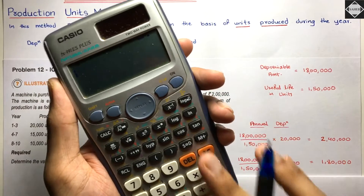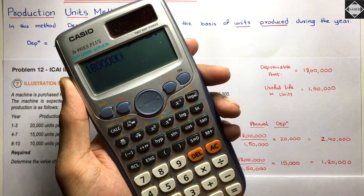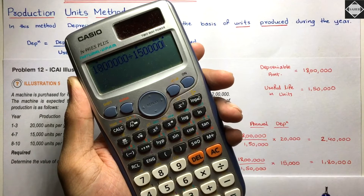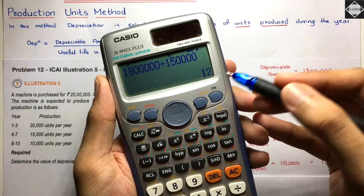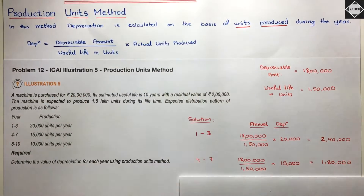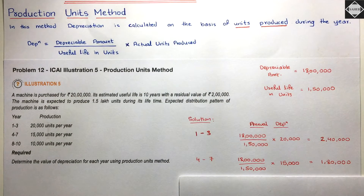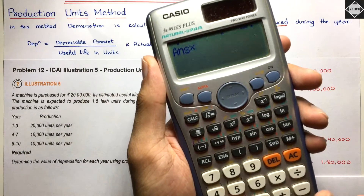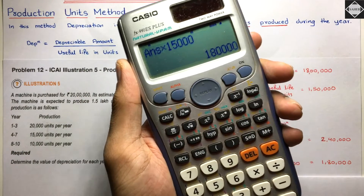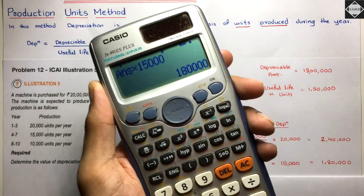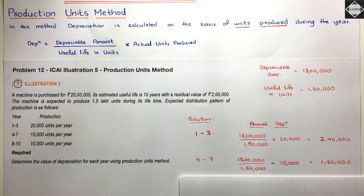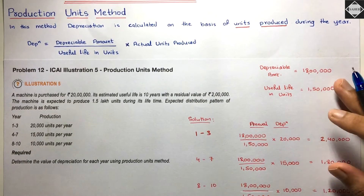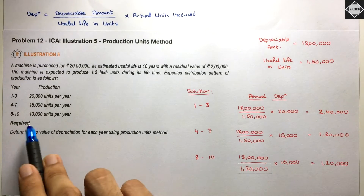For years 4 to 7: ₹18 lakhs divided by 1,50,000 gives the same ₹12 depreciation per unit. Multiply ₹12 by 15,000 units = ₹1,80,000. So the annual depreciation for years 4, 5, 6, and 7 is ₹1,80,000 each.